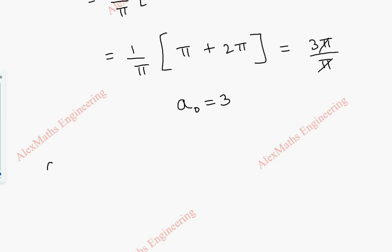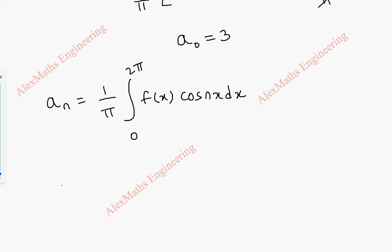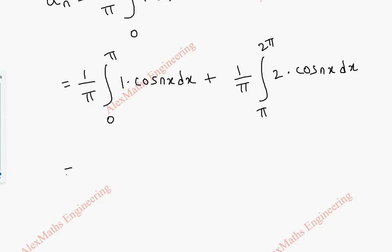Coming to aₙ, the formula is aₙ = (1/π) integral from 0 to 2π of f(x)·cos(nx) dx. Again this is split into two parts: (1/π) integral from 0 to π of 1·cos(nx) dx, plus (1/π) integral from π to 2π of 2·cos(nx) dx.